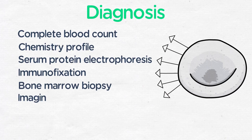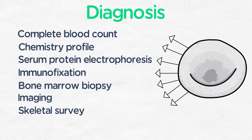Then you do imaging to look for bone lesions. In general, we do a skeletal survey, which is bone x-rays. We do not do a bone scan because those lesions are purely osteolytic, so you will not see them on a bone scan. You want to do x-rays or a skeletal survey, and these days we also do a low-dose CT scan or a PET CT scan for those patients.